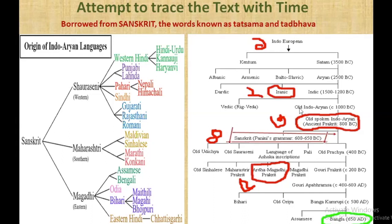Bengali is actually a language which is believed to have borrowed from Sanskrit, and these words are known as Tatsama or Tadbhava. From Sanskrit, we can even fragment Sanskrit into three pieces: the Sauraseni language, the Maharashtri, and the Magadhi.